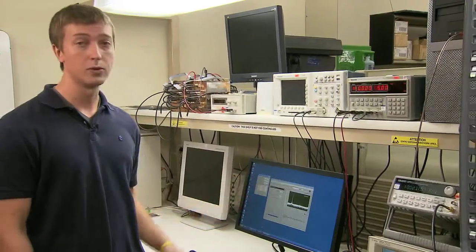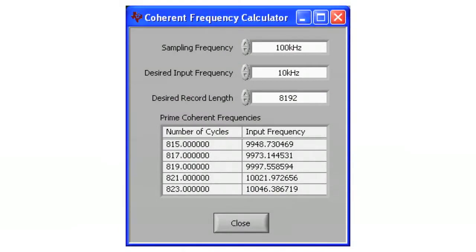And there's actually a tool in ADC Pro to calculate the coherent frequency that you need. We're sampling at 100 kHz, we desire 10 kHz at 8,192 samples, and so the coherent frequency actually gives you a list of frequencies, and we chose 10.02 kHz.